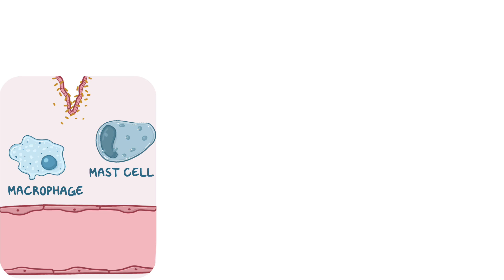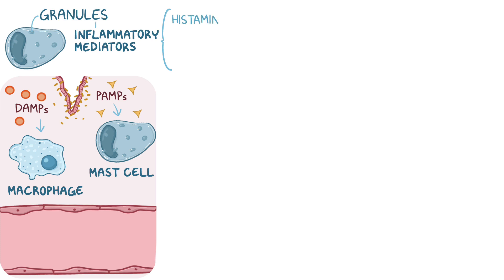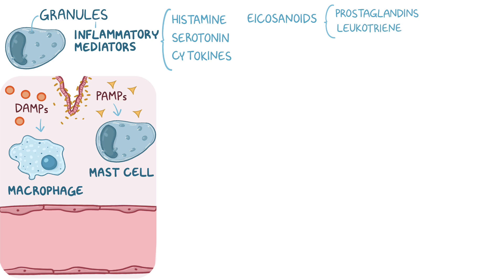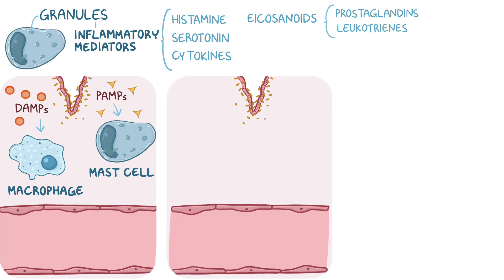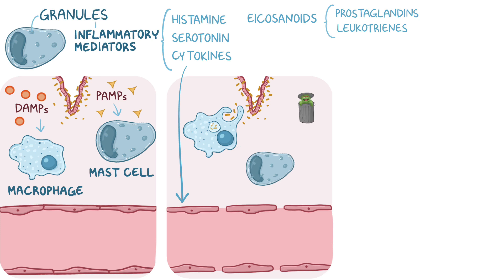When there's tissue damage, these cells respond to the PAMPs or DAMPs. Mast cells have granules containing different inflammatory mediators like histamine, serotonin, cytokines, and eicosanoids like prostaglandins and leukotrienes. These inflammatory mediators act on the endothelial cells surrounding nearby capillaries, causing them to separate from each other. In addition, macrophages — the garbage trucks of the body — start to eat up invading pathogens.